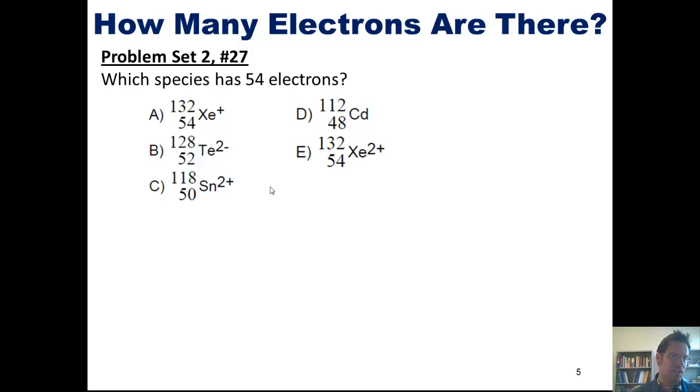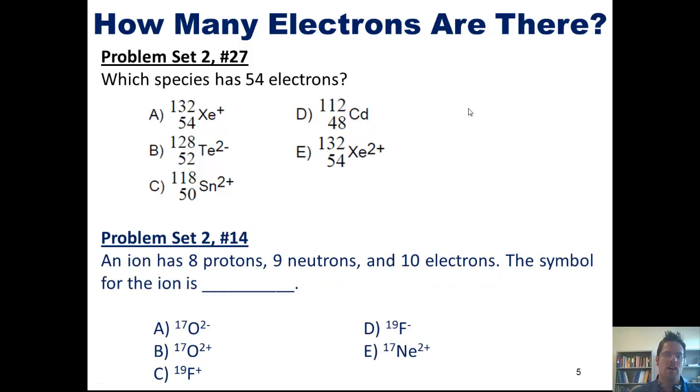And here are some more problems that I think you can solve for your own. Which species has 54 electrons? And next, an ion that is a charged atom has 8 protons, 9 neutrons, and 10 electrons. The symbol for this ion is what? Now remember, of course, you can match that by looking at the number of protons. The number of protons will always, always, always equal that element's atomic number.